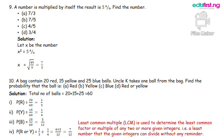Number 10: A bag contains 20 red, 15 yellow, and 25 blue balls. Uncle K takes one ball from the bag. Find the probability that the ball is A, red, B, yellow, C, blue, D, red or yellow. Solution: Total number of balls equals 20 plus 15 plus 25 equals 60.